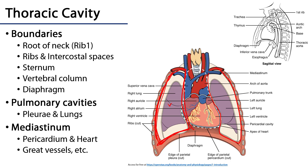Medial to these pulmonary cavities is an area called the mediastinum. That mediastinum is the central element of the thoracic cavity. It's going to contain a lot of key viscera such as the heart within the pericardium, the great vessels that are delivering blood to and from the heart, the thymus gland, and various neurovasculature throughout, and this will be a focus of some of our subsequent sessions.